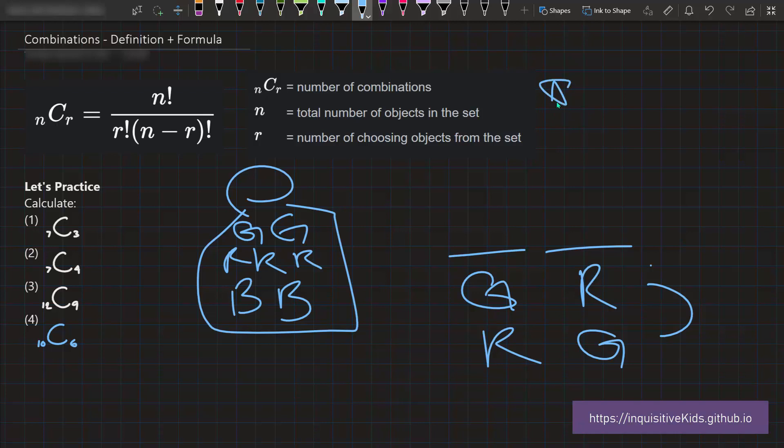If it was a combinations problem, these two possibilities would be considered the same combination. Because in combinations, the order of how you choose things does not matter. Yet in permutations, the order of things does matter.